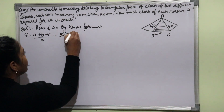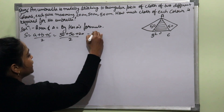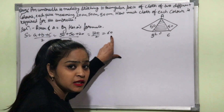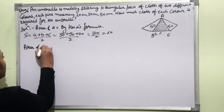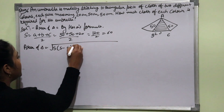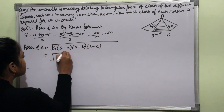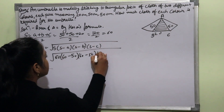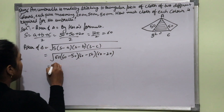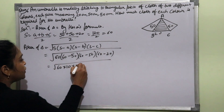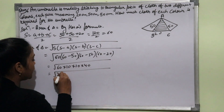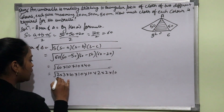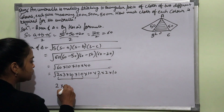Let triangle ABC represent one piece. By Heron's formula, S = (A + B + C) / 2 = (50 + 50 + 20) / 2 = 120 / 2 = 60. So S = 60 cm. Now we find the area of triangle: √(S × (S−A) × (S−B) × (S−C)) = √(60 × 10 × 10 × 40).